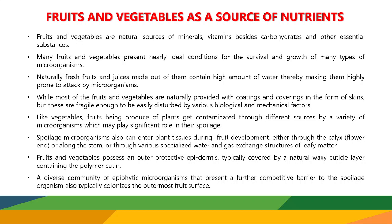Firstly, we should see why fruits and vegetables are a very important source and why they can be contaminated and infected by microorganisms. Because they are an excellent source of nutrients — they are a natural source of minerals, vitamins, carbohydrates, and other essential substances. Many fruits and vegetables present nearly ideal conditions for the survival and growth of many types of microorganisms. Fresh fruits and juices contain a high amount of water, and because of that moisture content they can be highly attacked by microorganisms — they are prone to attack by microbes.